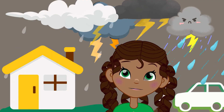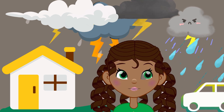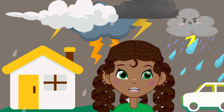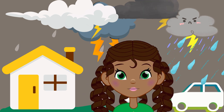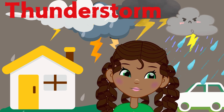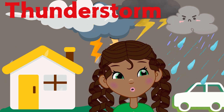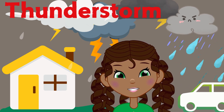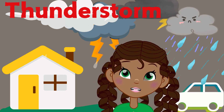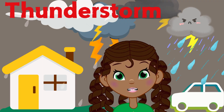Mother Nature brings us thunderstorms when the air gets very warm and rises up high into the sky. This warm air meets cooler air and makes big, dark clouds. Inside these clouds, little water drops bump into each other and create lightning and thunder. When the clouds get too heavy, the rain falls down. And that's how we get a thunderstorm!